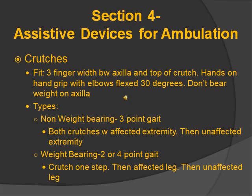Non-weight bearing uses a three-point gait, meaning the patient cannot place the affected leg down. Both crutches move with the affected leg, and then you move the unaffected leg. It's like hopping on the unaffected leg — move both crutches with the affected leg, then move the unaffected leg.